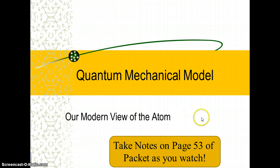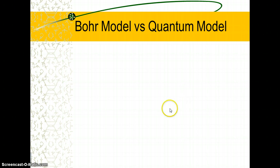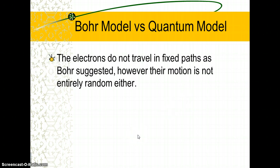When we last left off, our model of the atom was the Bohr model. The Bohr model said that electrons travel in orbits, like a planet orbits around the sun — in fixed energy levels. The quantum mechanical model says their motion is a little more random than that. It's not just totally in a fixed orbit. The quantum mechanical model talks a lot about probabilities and regions where the electron is more likely to be found. So it's not an exact pathway like the Bohr model, but it's not an entirely random motion either.